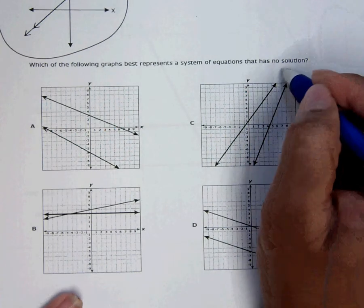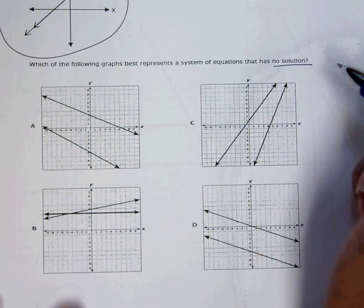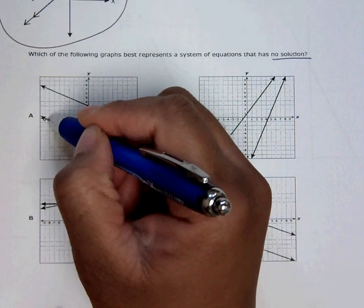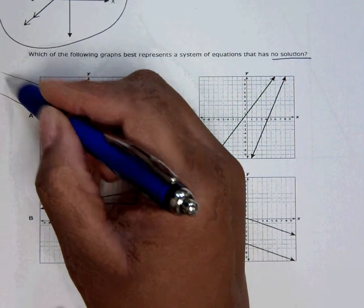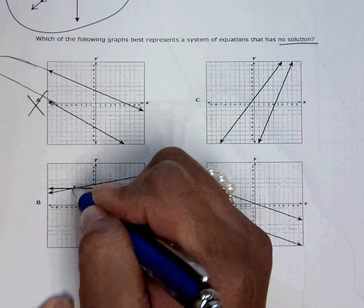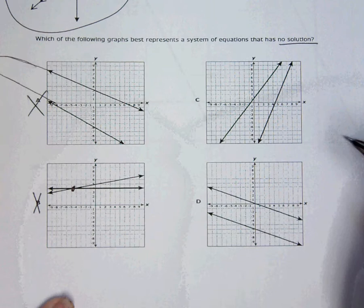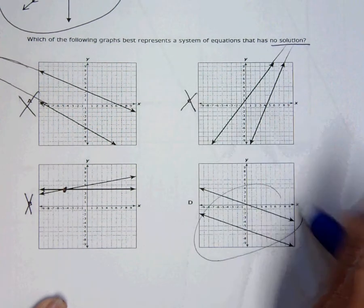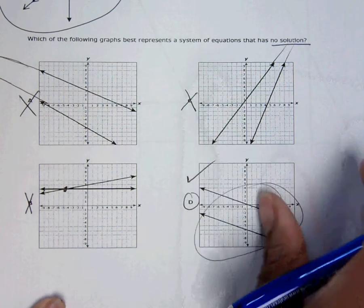It asks for the answer choice that is no solution, so that means it can't cross. A is eventually going to cross, so can't be A. This one does cross, so can't be B. That one is more obvious. This is the only one that's not going to cross, so that's going to be my answer.